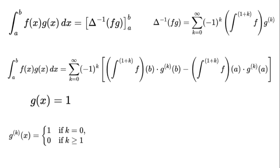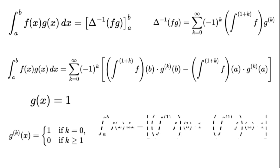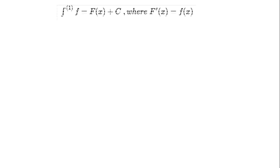Plugging in, the series collapses to just the k equals 0 term: the integral from a to b of f(x) equals the antiderivative of f to the power of 1 evaluated at b times 1 minus the antiderivative of f to the power of 1 evaluated at a times 1.